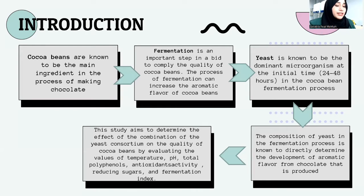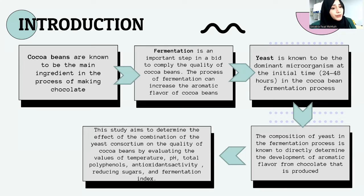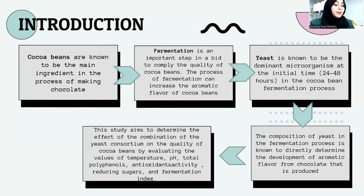The composition of yeast in fermentation is known to influence the development of aromatic flavor of chocolate. The use of starter cultures in cocoa fermentation has been carried out since the middle of the 20th century, and different microbial species have been proposed as candidate starter culture strains, especially yeast. Based on this background, this study aims to determine the effect of the yeast consortium combination on the quality of cocoa beans by evaluating temperature, pH, total polyphenol, antioxidant activity, reducing sugars, and the fermentation index.